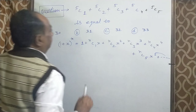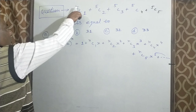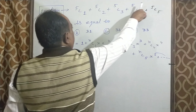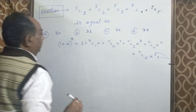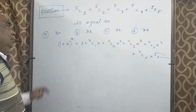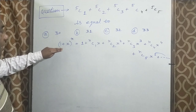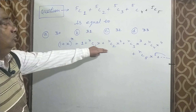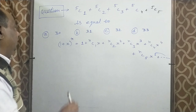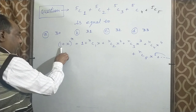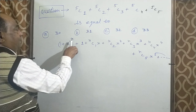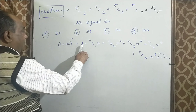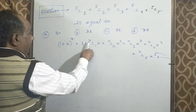यहाँ 1 से 5 तक और N हमारा 5 है। इस condition में हम binomial theorem की formula को use करते हैं: (1 plus X) की power N का expansion।